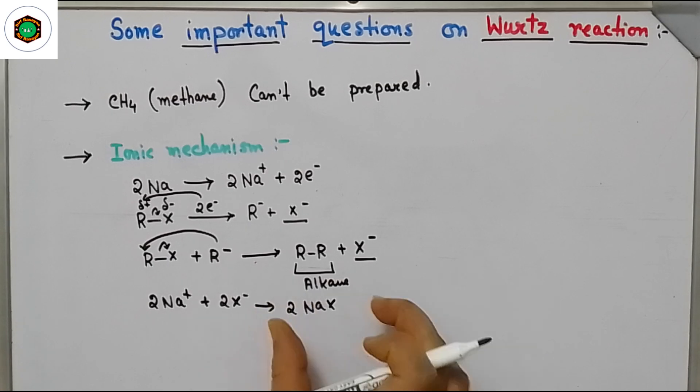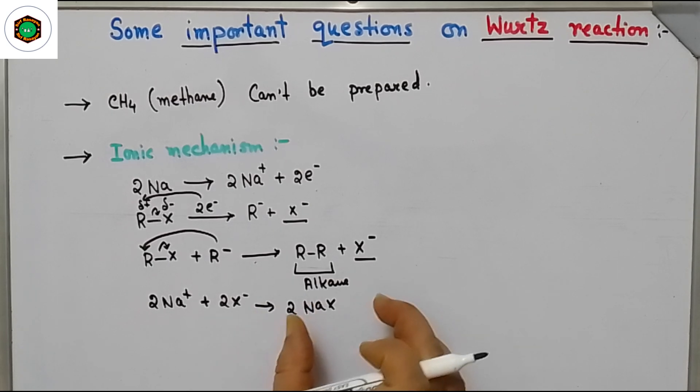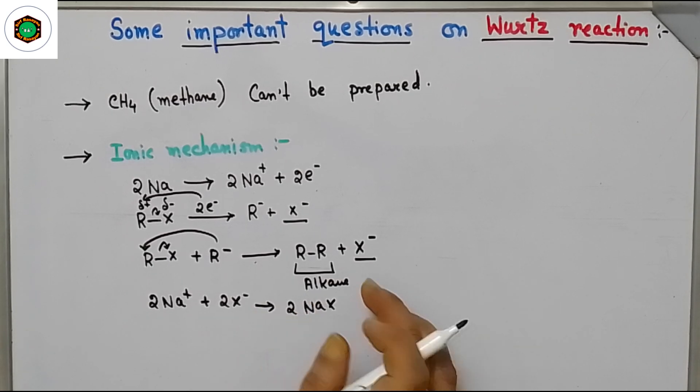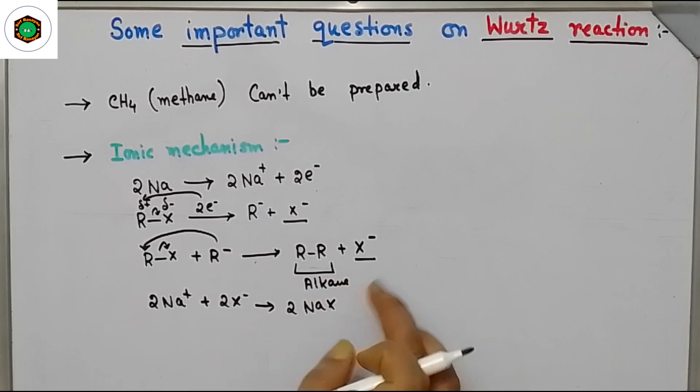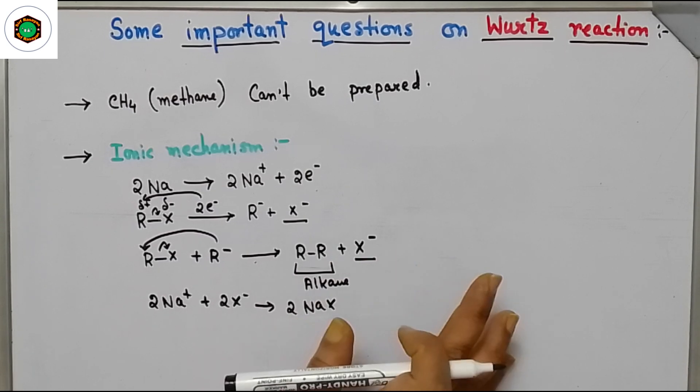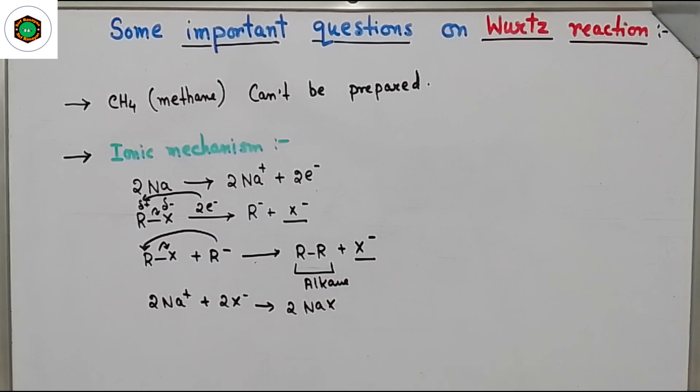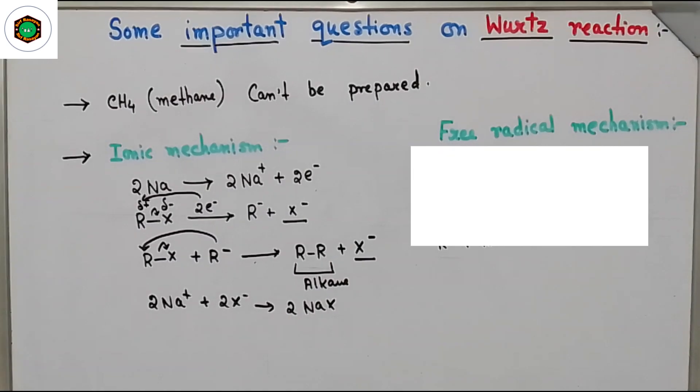So by this reaction we are getting higher alkane. Therefore, methane formation is not possible here.